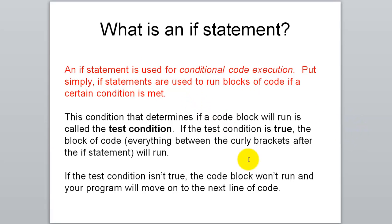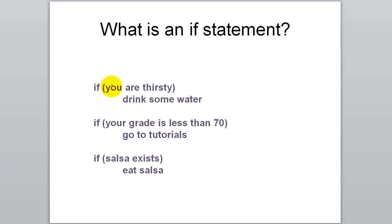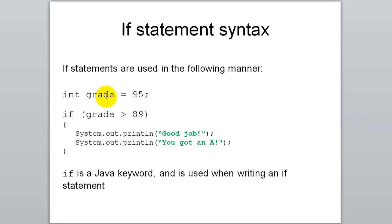The basic idea of an if statement is that we want to test if something is true or not. If it is true, we want to run some code; if it's not true, we skip that code. Some real-life examples: if you're thirsty, drink some water; if your grade is less than 70, go to tutorials; if salsa exists, eat salsa. In Java, if we have a variable called grade storing 95, we can write an if statement that says if grade is greater than 89, print 'good job, you got an A.' If your grade was 89 or less, it wouldn't run that block.